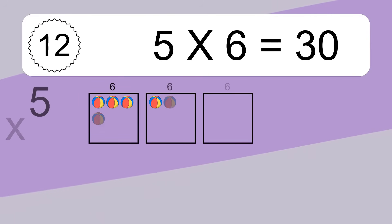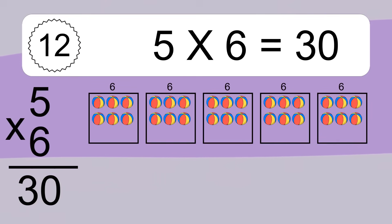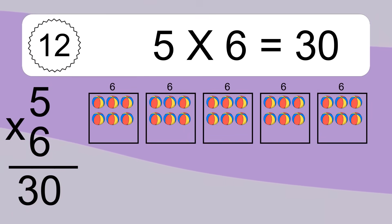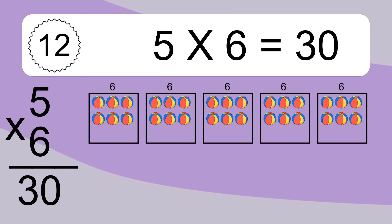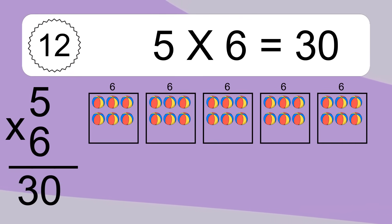5 times 6 equals 30. We have 5 boxes and each box has 6 colorful balls inside. If you count all the balls in all the boxes together, you will have 5 times 6 balls. This equals 30 balls.